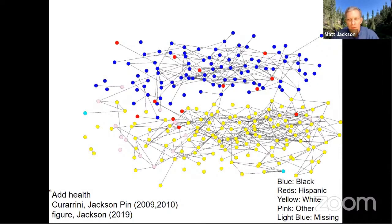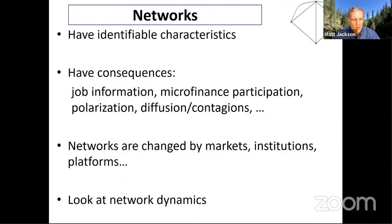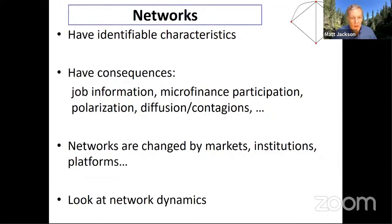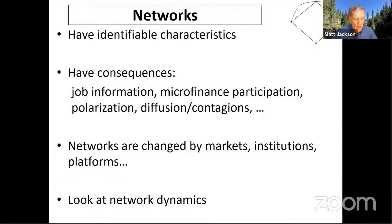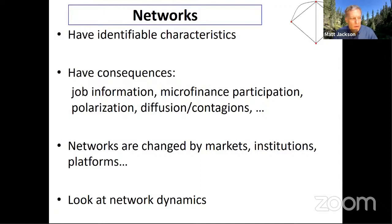The point of this is to say that when we look at social networks, they have identifiable characteristics. They tend to look different from networks put down purely at random. You see structures, you can identify those structures, and those structures have consequences. If we want to understand how job information flows in a society — people tell their friends about opportunities, recommend their friends for jobs, for internships — these things make a difference in information flow, in norms of behavior, in contagion and diffusion. These networks are also shaped by markets, institutions, platforms, and so forth.